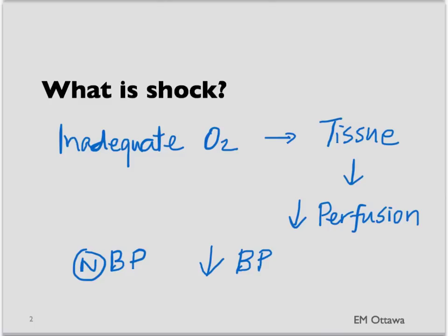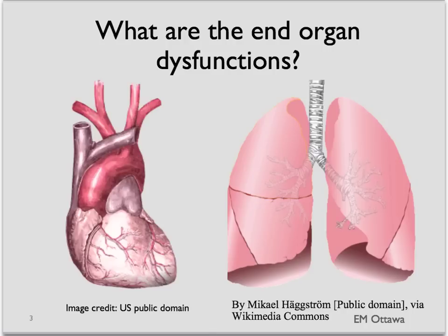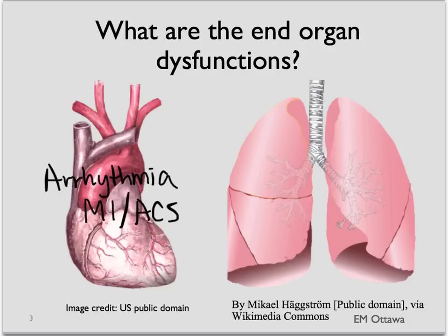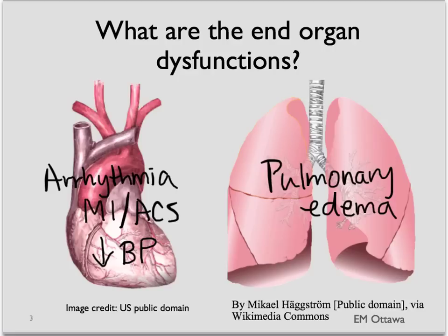There are a few different end organs that we are interested in. End organ dysfunction includes the heart — there will be arrhythmia, ischemia, and hypotension. In the lung, end organ dysfunction can include pulmonary edema and ARDS, acute respiratory distress syndrome.